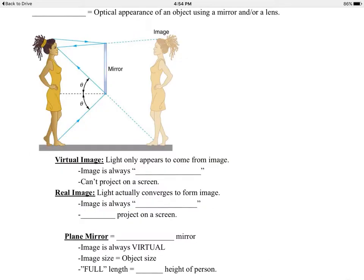Let's talk about some of the terms involved with mirrors. First of all, what you see in the mirror is usually not in the mirror — it's usually behind, or as you'll find out later, in front of the mirror. What you see is what we call the image — it's an appearance of you or whatever is being reflected. In this case the object is a woman and the image is something that looks like the woman. One difference, as you know in a flat mirror, is that the image is left-right reversed. If you raise your right hand, your image in the mirror raises its left hand.